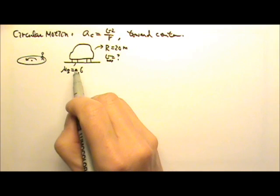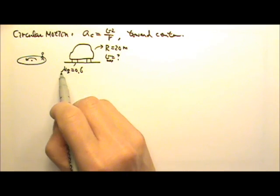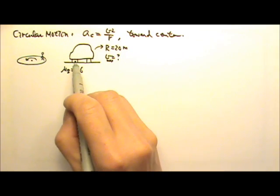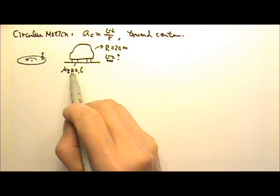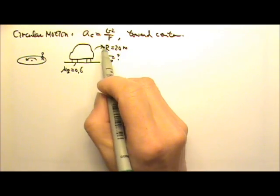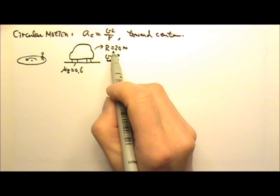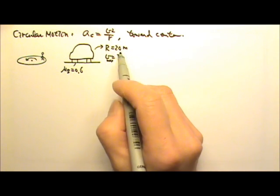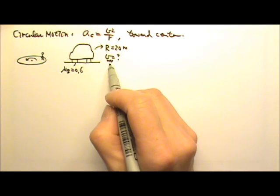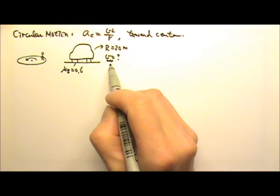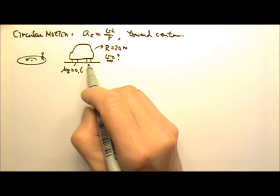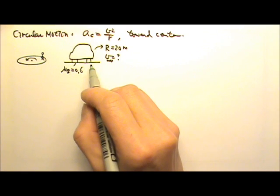Let's say the coefficient of static friction between the tires and the road is 0.6, and the circular turn has a radius of 20 meters. We're looking for the maximum speed the car can have without skidding.